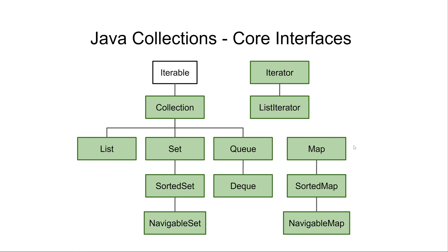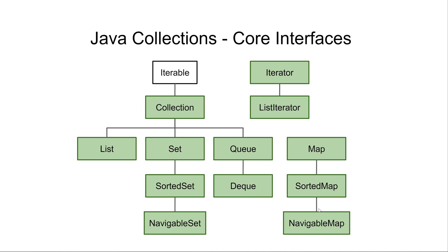The Map interface does not by itself guarantee any ordering of the key-value pairs stored internally. That is why we have the SortedMap interface, which provides a method for sorting the keys internally. We also have a NavigableMap, which enables you to navigate the keys stored in the map according to the sort order. SortedMap extends Map, and NavigableMap extends SortedMap — so a NavigableMap is also a SortedMap, which is also a normal Map.